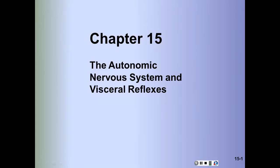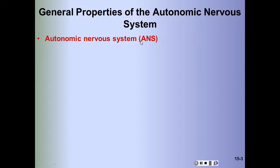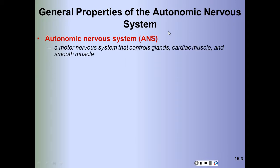Chapter 15 covers the autonomic nervous system and visceral reflexes. We've already covered the CNS and PNS, and now we're going to cover the autonomic nervous system, which is a subdivision of the PNS. Throughout this lecture, I'll refer to the autonomic nervous system as the ANS, so please keep that in mind.